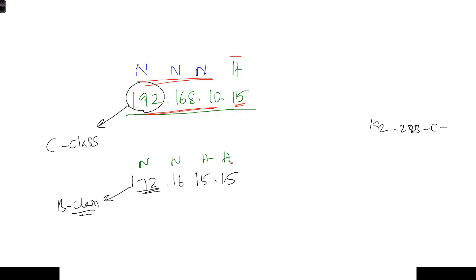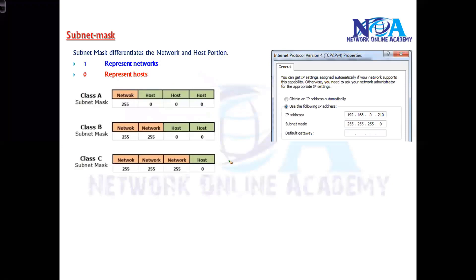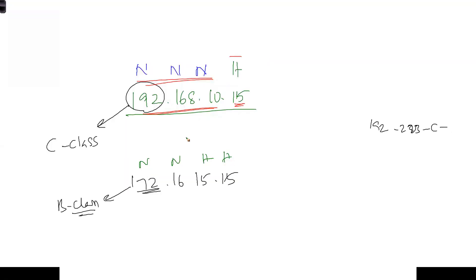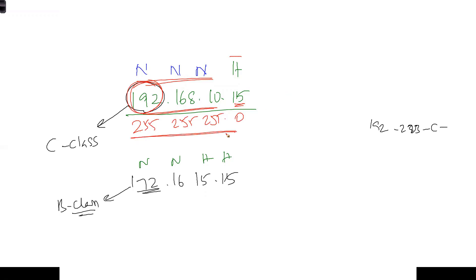But when we do that with computers or any networking device, how does the device identify the network and host portions? Of course, by seeing the subnet mask. We generally write the subnet mask as 255.255.255.0, and this actually tells how many network portions and how many host portions there are.